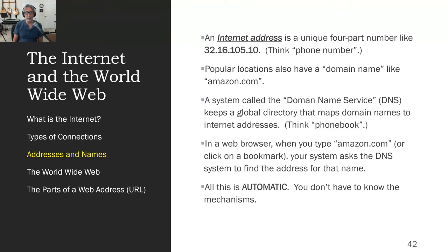But if somebody's really popular, like Amazon.com, nobody wants to type in nine or twelve digits to get to Amazon — they want to type Amazon.com. That system, which is like a phone book, is called the Domain Name Services, or DNS.